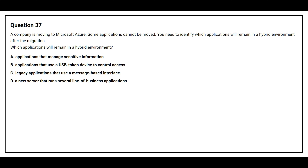Question number 37. A company is moving to Microsoft Azure; some applications cannot be moved. You need to identify which applications will remain in the hybrid environment after the migration. Option A: applications that manage sensitive information. Option B: applications that use a USB token device to control access. Option C: legacy applications that use a message-based interface. Option D: a new server that runs several lines of business applications. The correct answer is Option C: legacy applications that use a message-based interface.